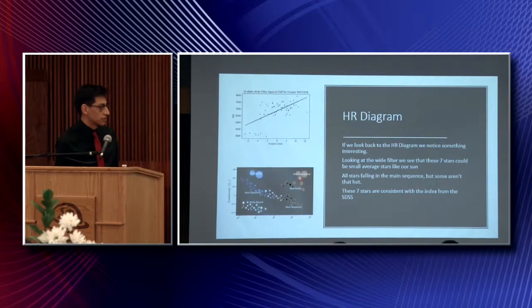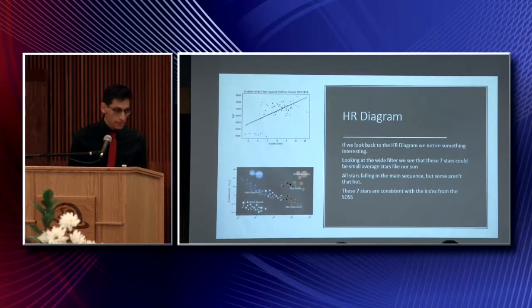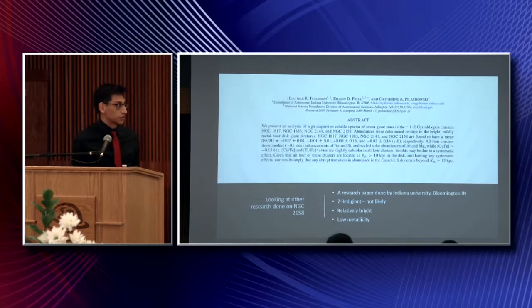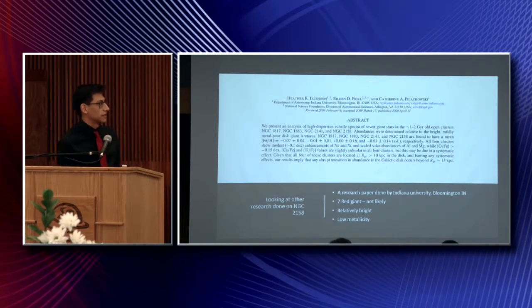main sequence, a red giant, or a super red giant. So I found this research article from Indiana University that says that they found seven giant stars in these clusters, NGC 1817, 1883, 2141, and 2158.